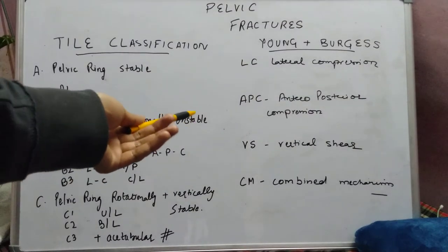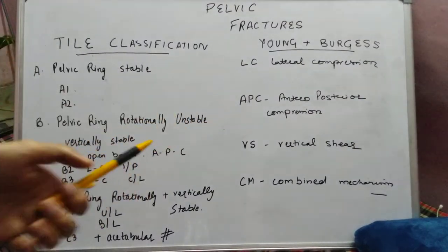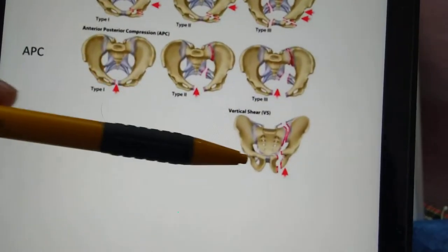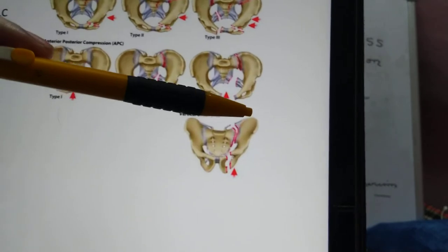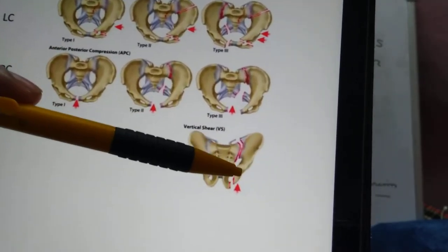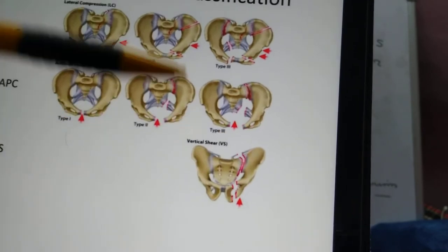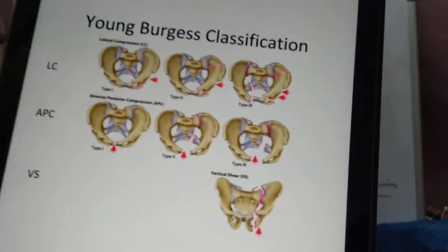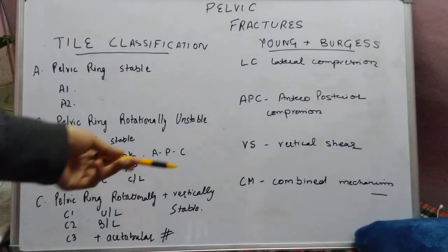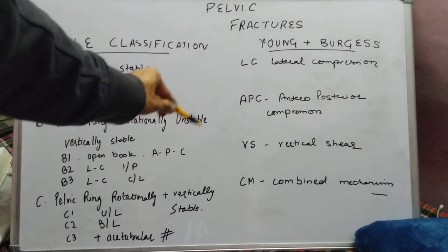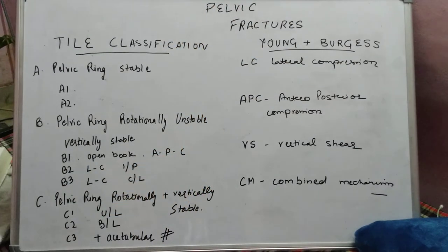The third type is the vertical shear type, in which there is gross displacement of one or both hemipelves superiorly or inferiorly. Lastly, there is the combined mechanism type, in which any combination of the three injury patterns can coexist.